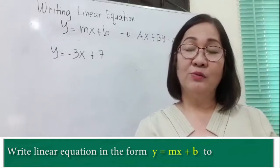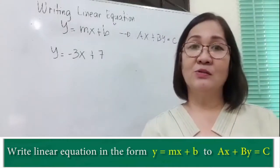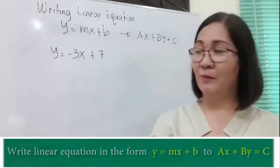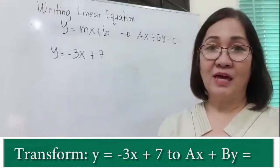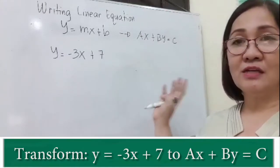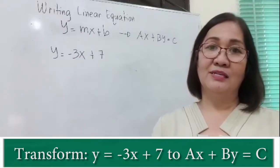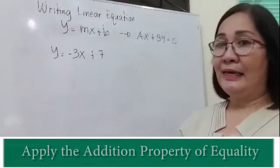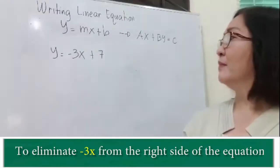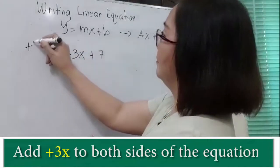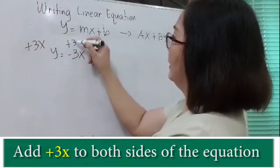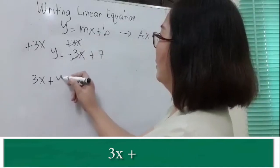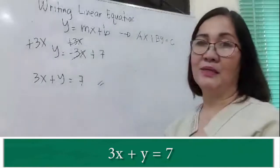This time we're going to write the slope-intercept form y is equal to mx plus b to the standard form ax plus by is equal to c. For example, we have y is equal to negative 3x plus 7. We will use the addition property of equality and add positive 3x to both sides to eliminate negative 3x from the right side. So we have 3x plus y is equal to 7.